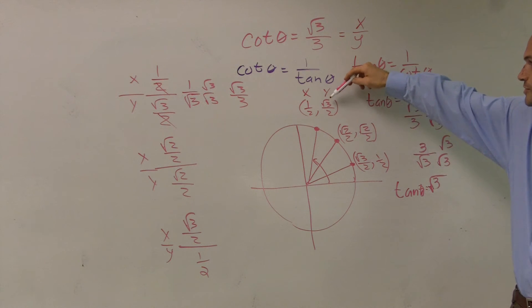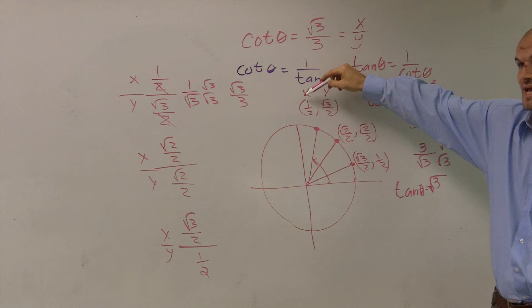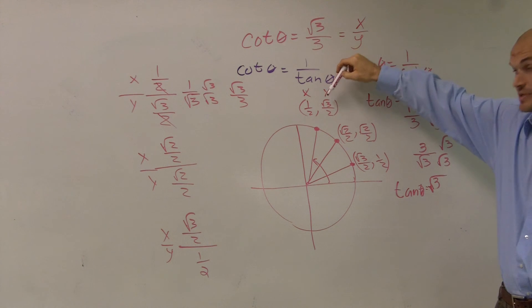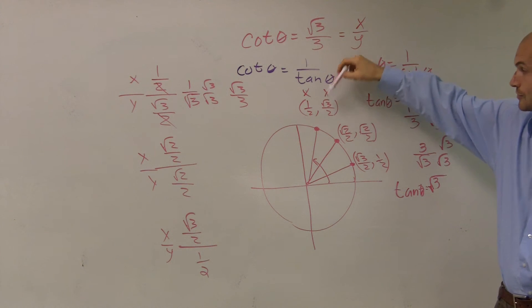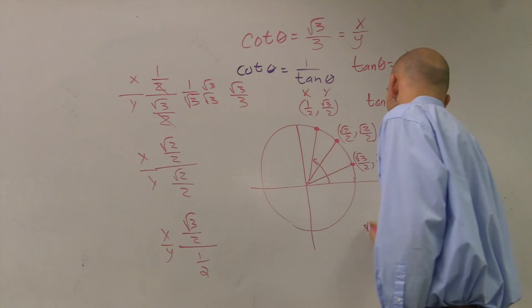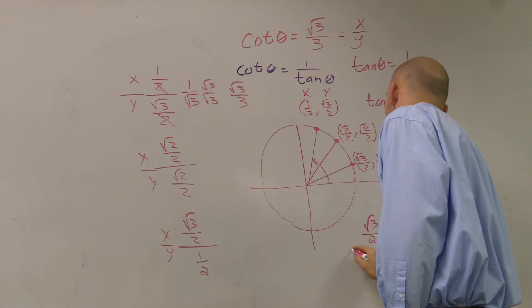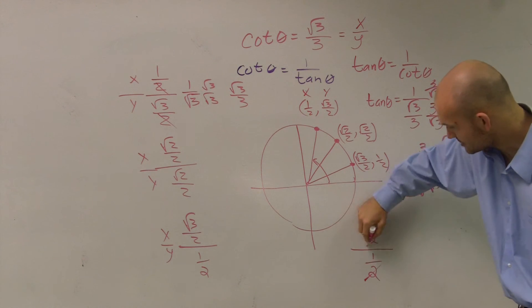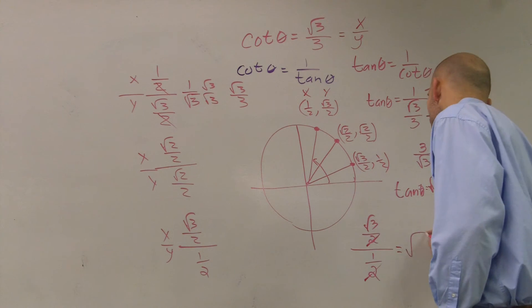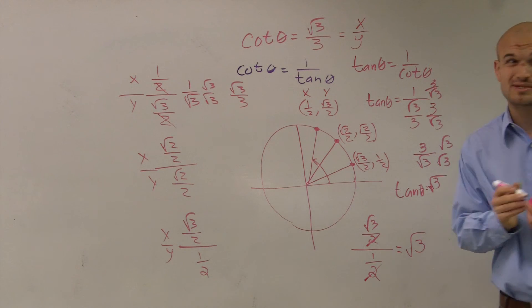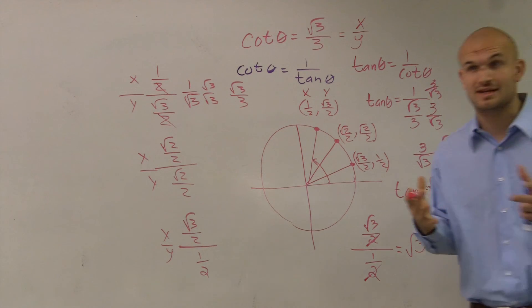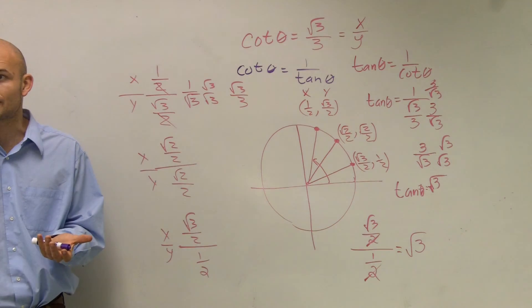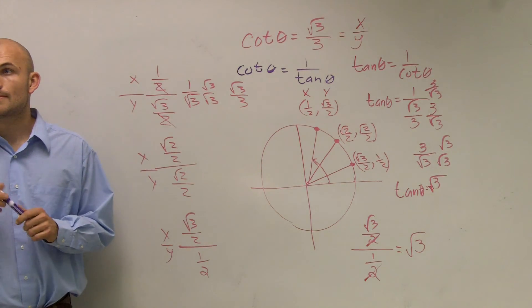So which one of these, when you look at the tangent — meaning the y over the x — gives you radical 3? This one: square root of 3 over 2 divided by 1 half. Those cancel out and you're just left with radical 3. This approach is a little bit more difficult when you're given a tangent or a cotangent value.